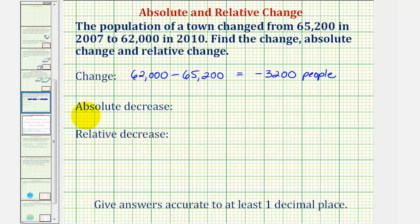So the absolute change is just the absolute value of the change. So we'd have the absolute value of negative 3,200 people, which of course is just 3,200 people.